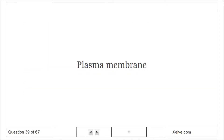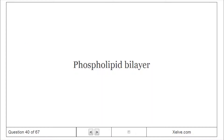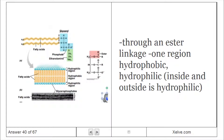The plasma membrane is a phospholipid bilayer with proteins. The phospholipid bilayer is connected through an ester linkage, with one region being hydrophobic.